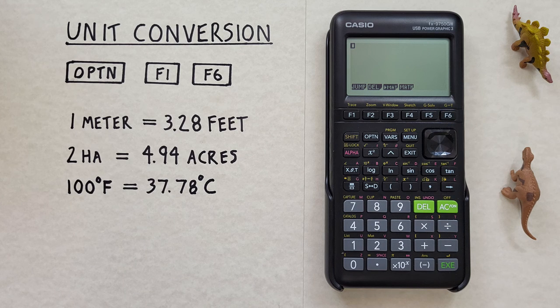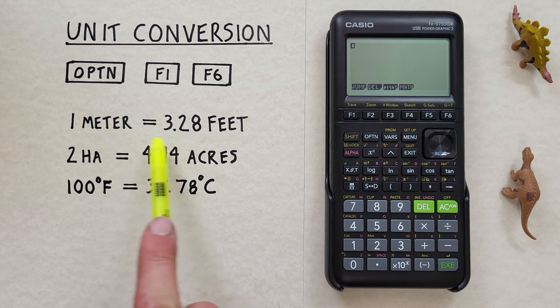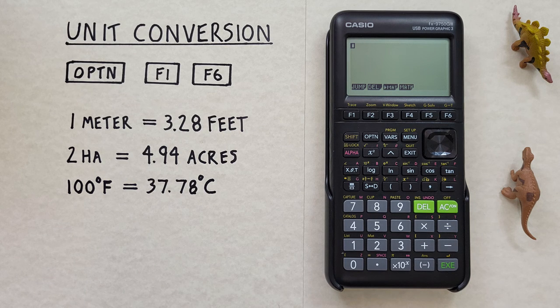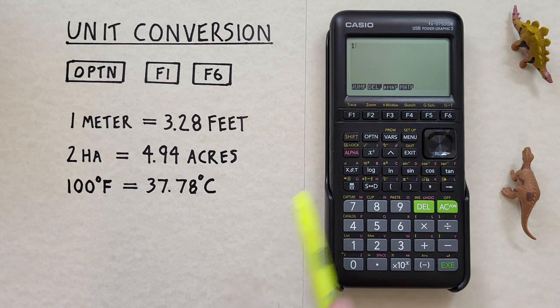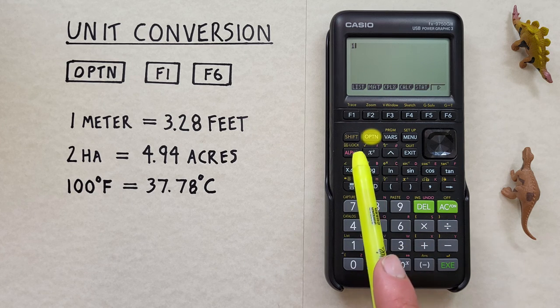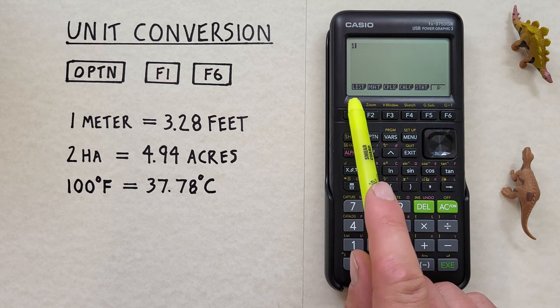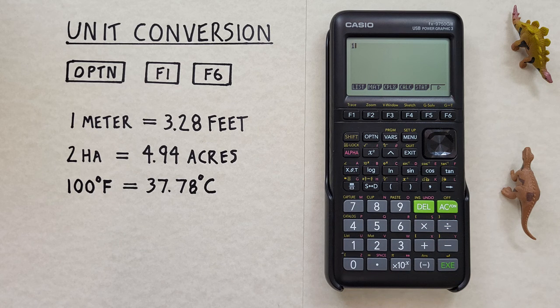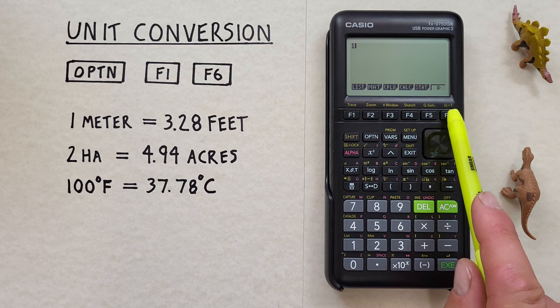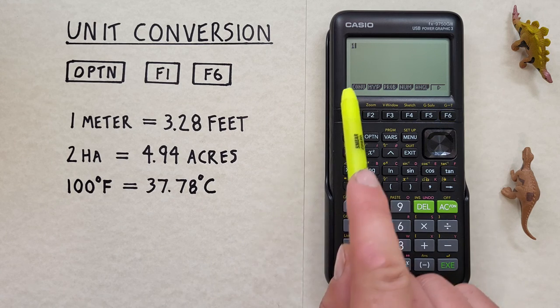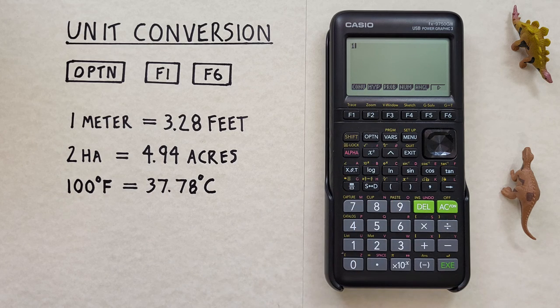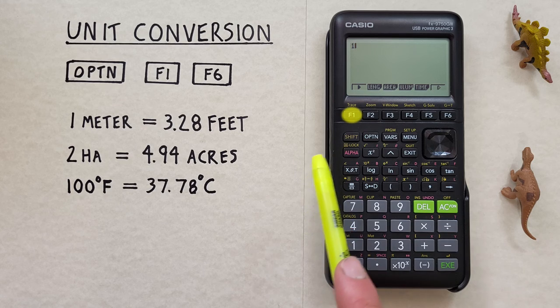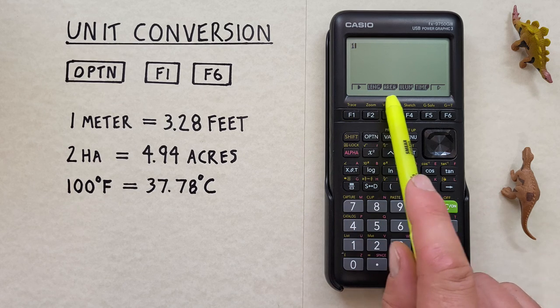If we were given a distance like say one meter and wanted to convert that to feet, how would we do that on this calculator? To start we would enter the 1 for one meter and then press the Option and see this series of options here. We want to press F6 to go to the next set of options and here we see the first option is CONV or convert for F1 so we'll choose that, press F1, and then we're given this list of options.